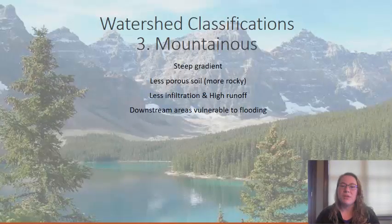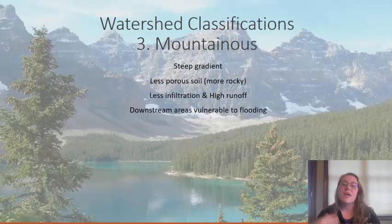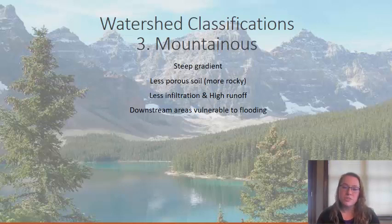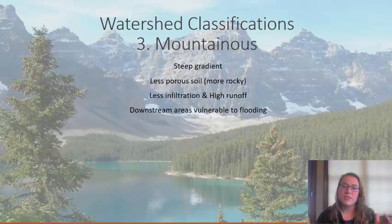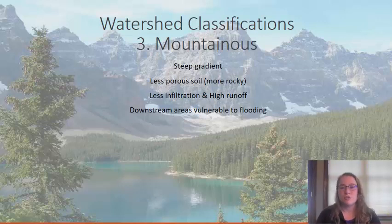The next type of watershed is a mountainous watershed. These tend to have very steep gradients or slopes and less porous soil because of the rocky nature of mountains, which also means less infiltration and more runoff. Mountainous watersheds are extremely important for freshwater supplies for many western communities in the United States. However, because of their determined boundaries from mountain ridges and high levels of runoff, they are particularly vulnerable to flooding in downstream areas.